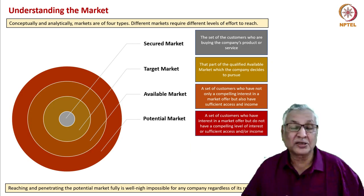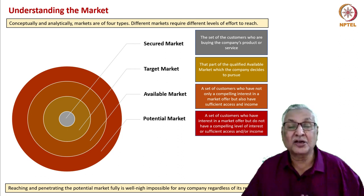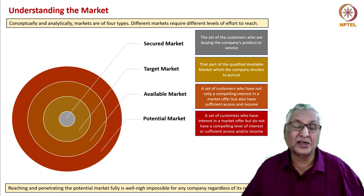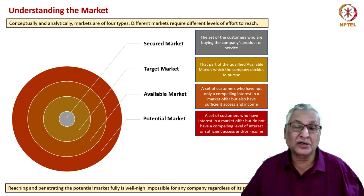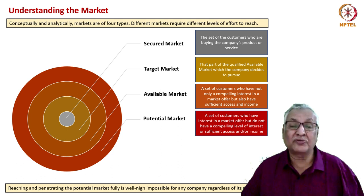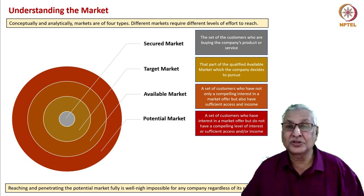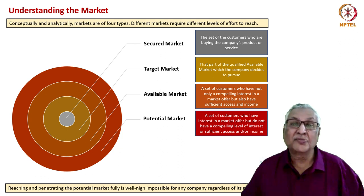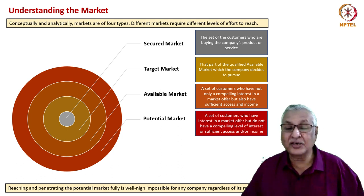How do we understand the market? The market may be singular for a company, but the market is multi-layered. The market available for a company is always far larger than the company would recognize. There is a potential market — for apparel, the entire population of a country is the potential market; for a fountain pen, all school-going, college-going, and working people constitute it. For passenger cars, the potential market includes not only existing car users but also two-wheeler and three-wheeler users who would like to travel. The potential market is a set of customers who have interest in a market offer but do not have a compelling level of interest, sufficient access, or income to buy.